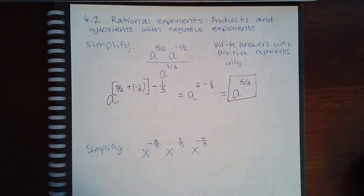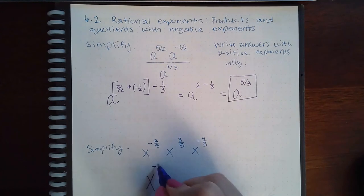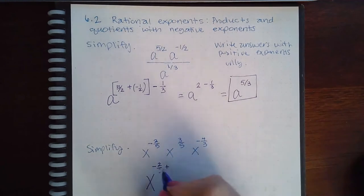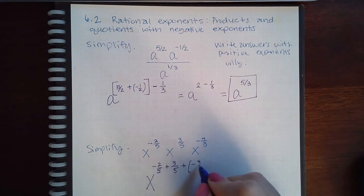Here is just a bunch of products, so all I'm going to do is keep the same base and have negative two fifths plus three fifths plus a negative four thirds.